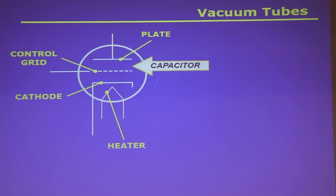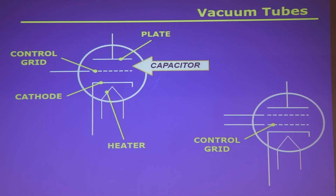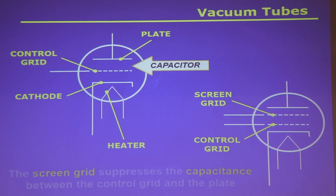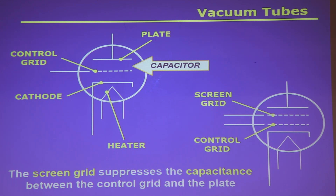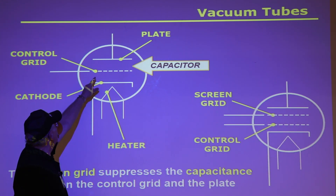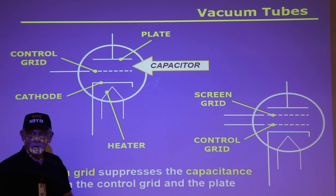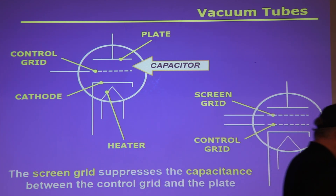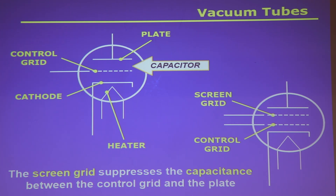Looking at a physical tube — the thing around the outside is the plate, and up inside you can see the screen grid. The schematic symbol for a capacitor was two plates spaced apart. Look how much that looks like a capacitor — it does have some capacitive tendencies. Those capacitive tendencies we don't necessarily want inside a tube, so we put another grid inside called a screen grid. The screen grid's job is to block the control grid from the plate so it doesn't look like a capacitor.